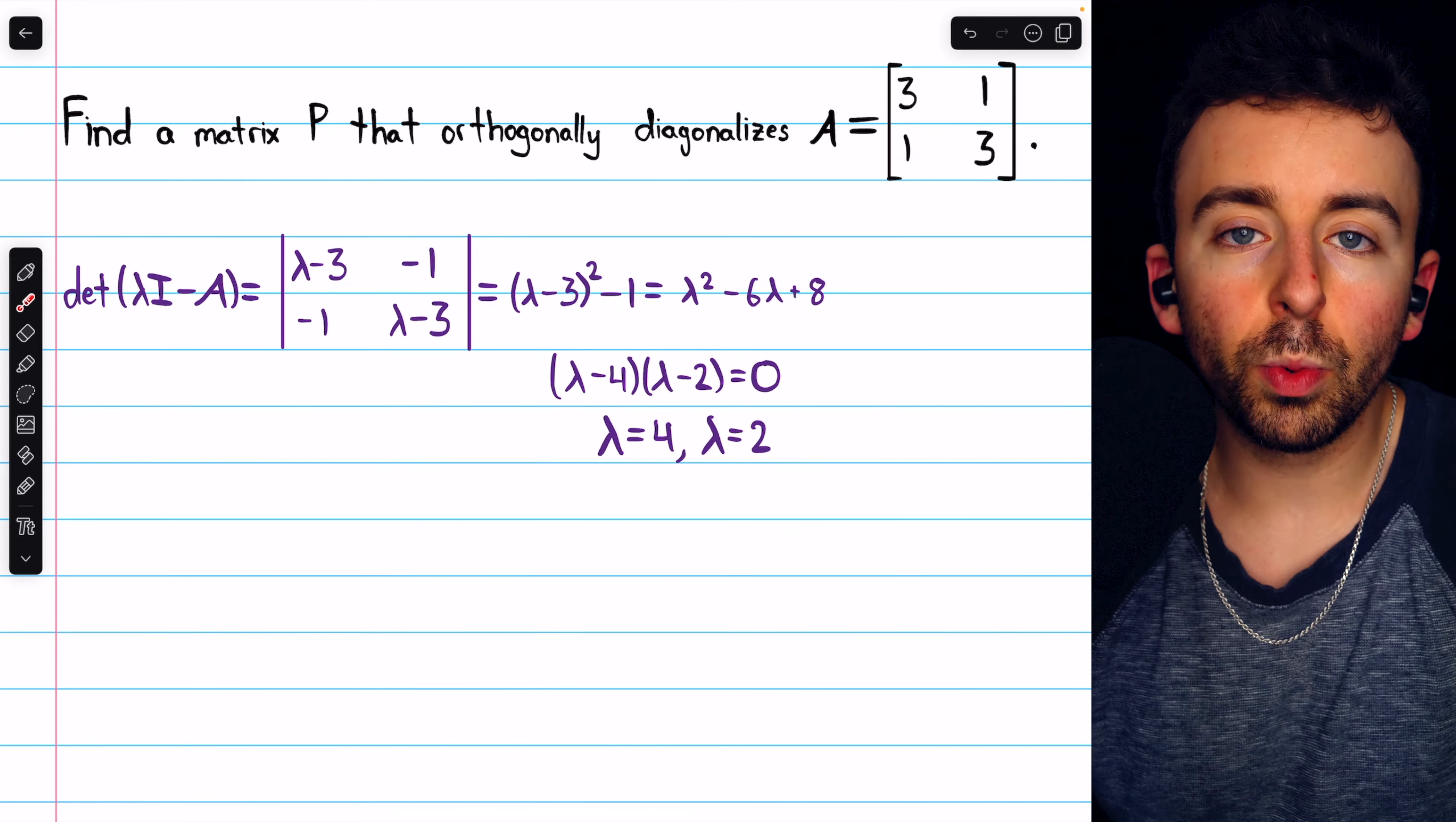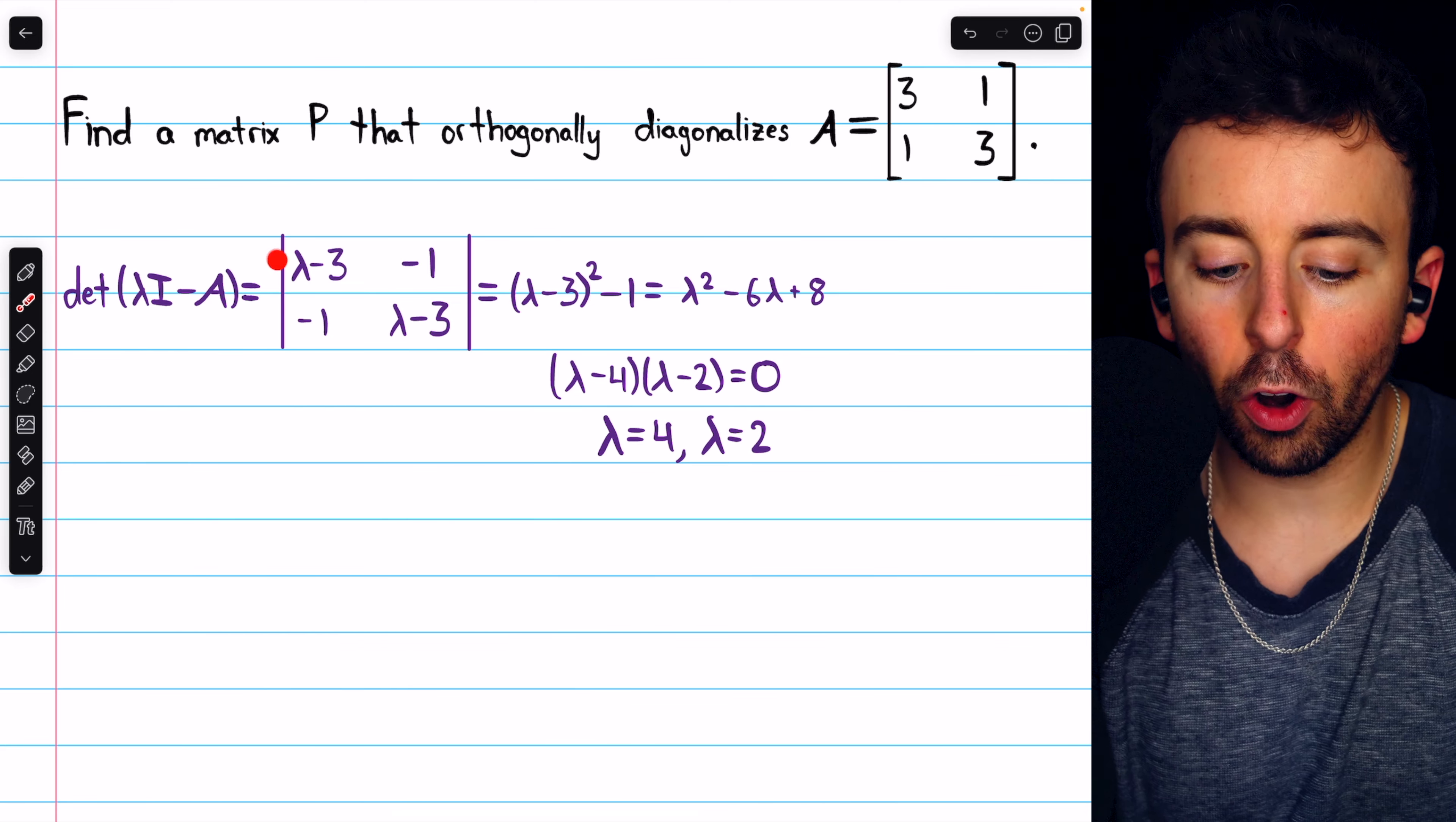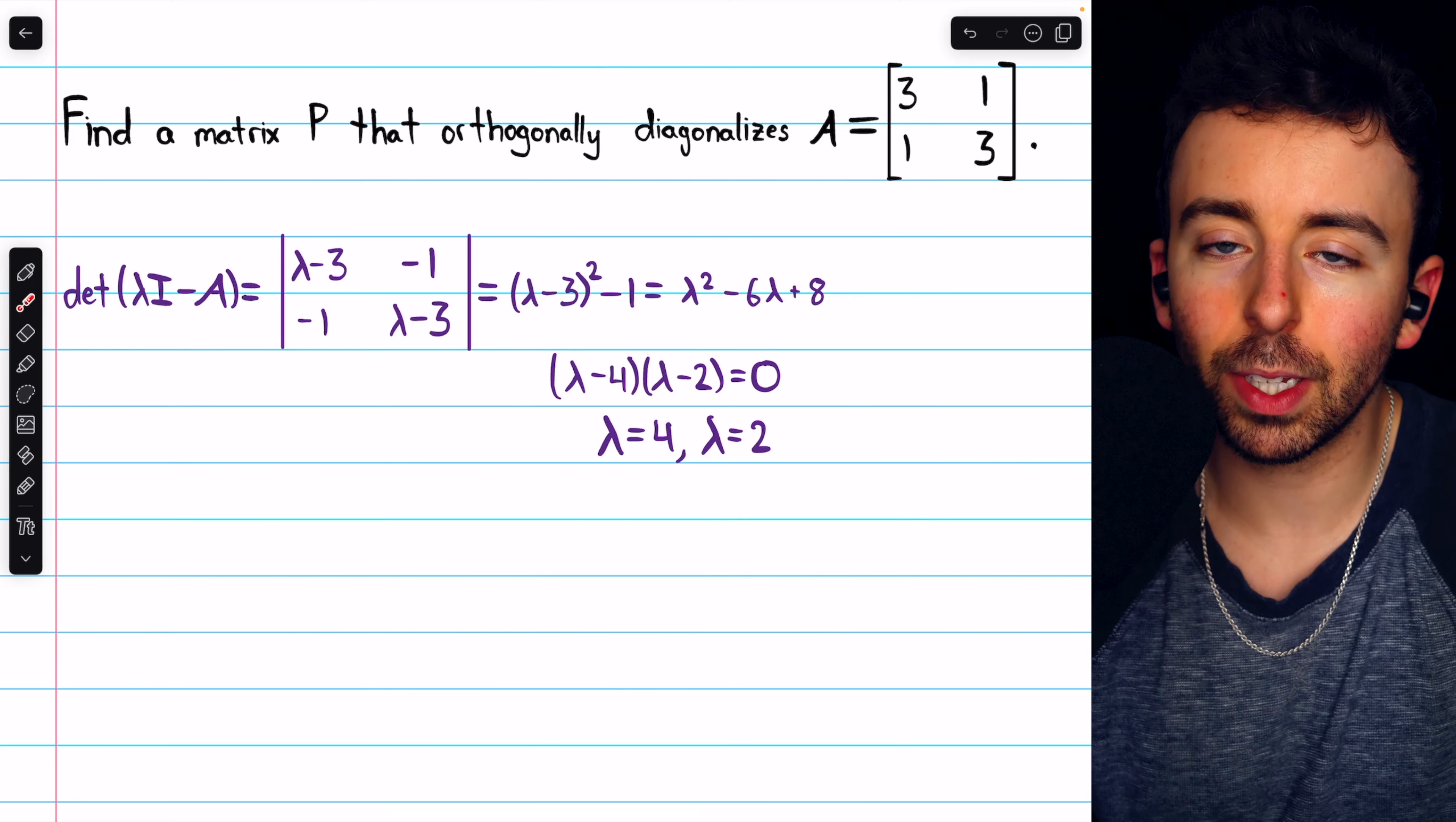So we've got to start with the eigenvalues. To find the eigenvalues, we need to find the characteristic equation. We find the determinant of lambda I minus A. Lambda I minus A looks like this - it's the entries of A negated with lambda added on the diagonal. The determinant of this is lambda minus 3 times lambda minus 3 minus negative 1 times negative 1, so minus positive 1. We have lambda minus 3 squared minus 1, which equals lambda squared minus 6 lambda plus 8.